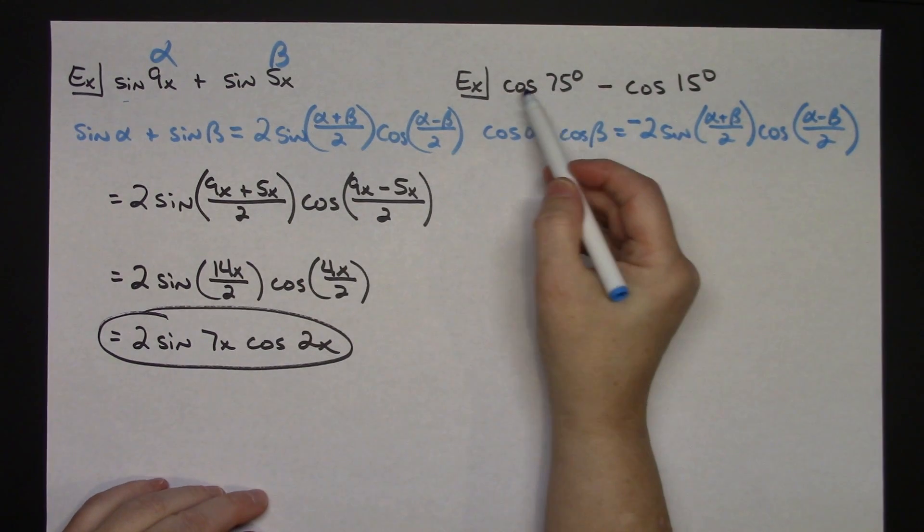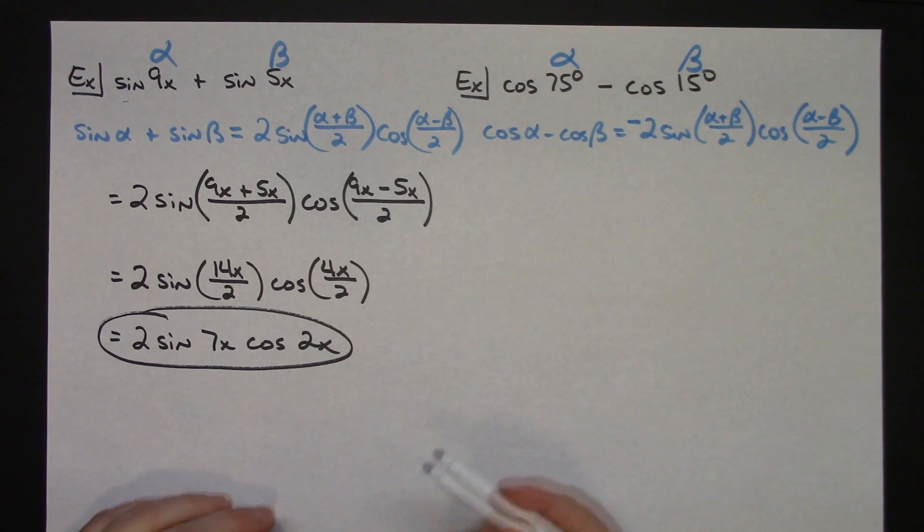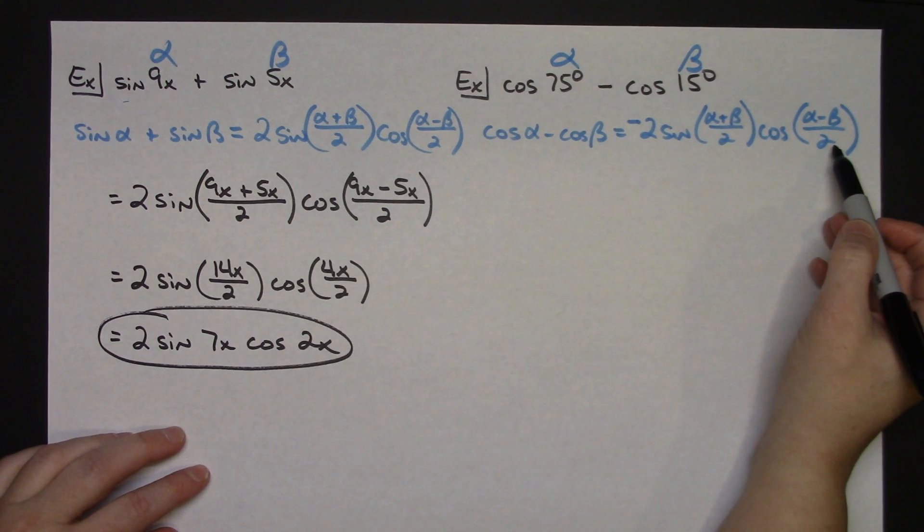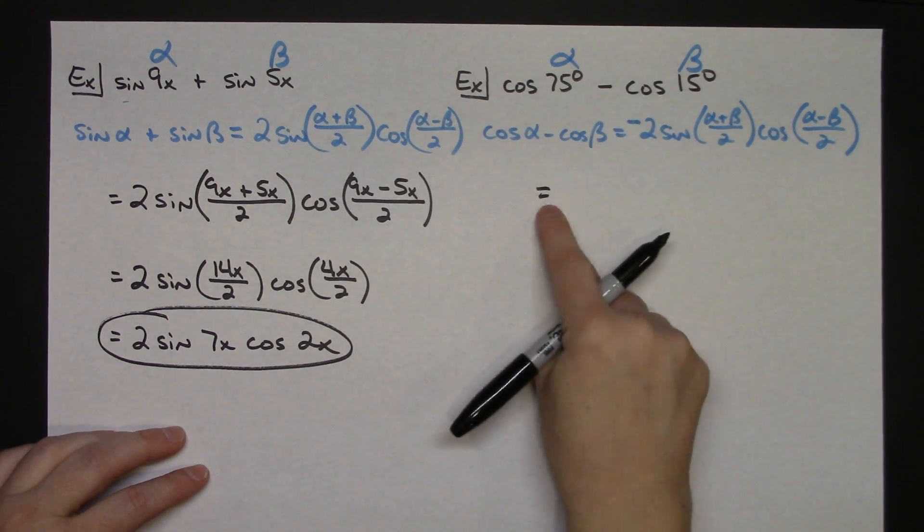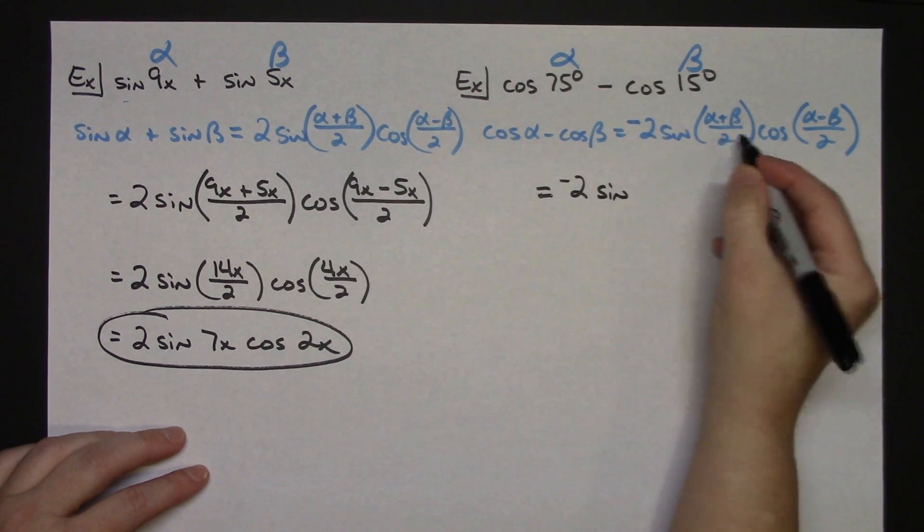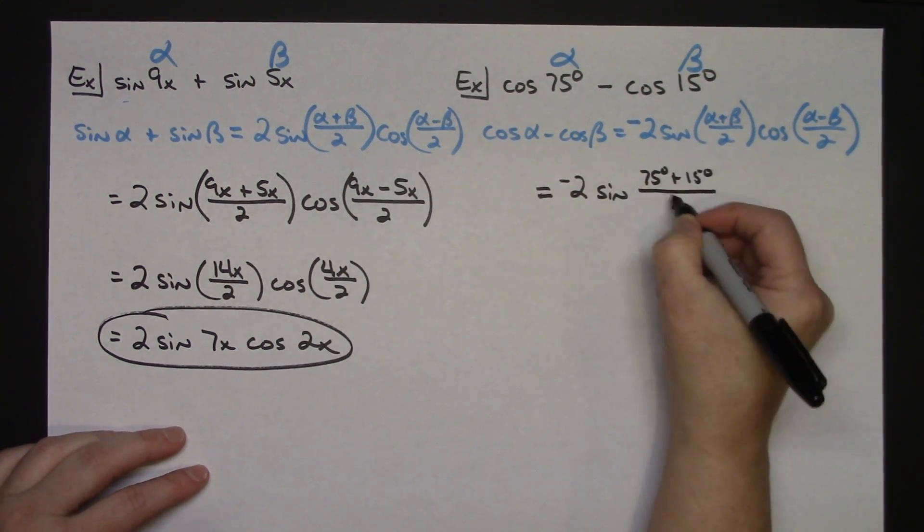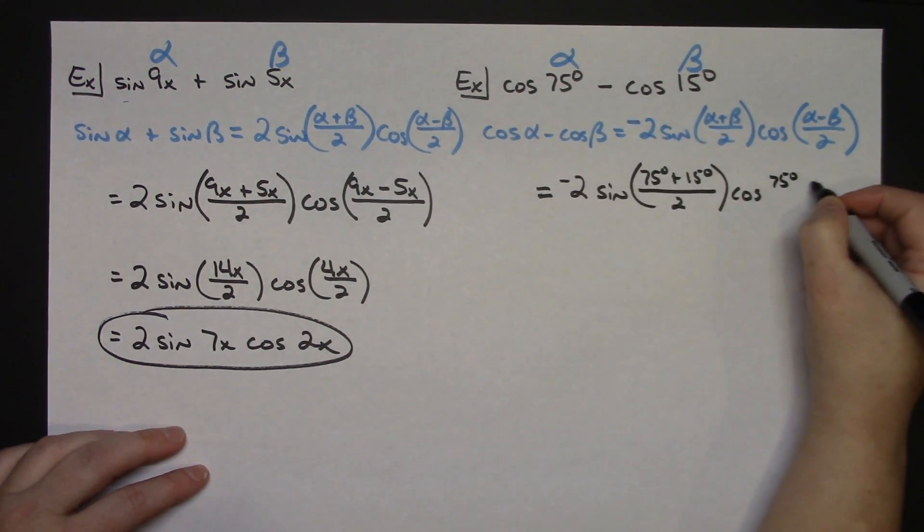Coming up here and looking, whatever your first value is right there that's your alpha. Whatever your second value is right there that's beta. Now as I begin to work this out I'm only going to focus on the right hand side of the formula. I'm going to do a direct substitution simplifying wherever I can. So this entire expression will be equal to a negative 2 sine. Now I'm going to add my alpha and beta, so 75 degrees plus 15 degrees all over 2, cosine my alpha 75 degrees minus 15 degrees all over 2.